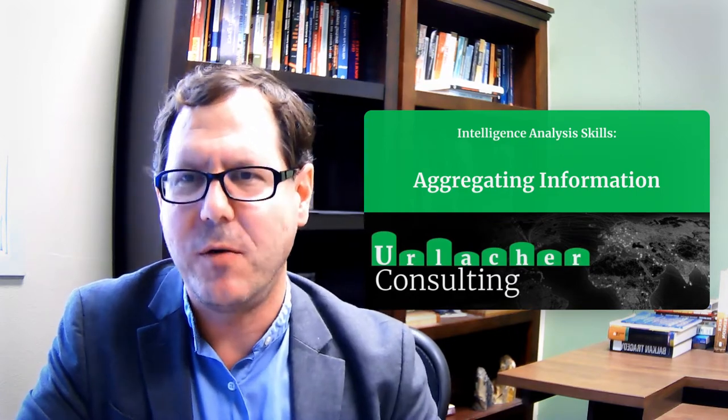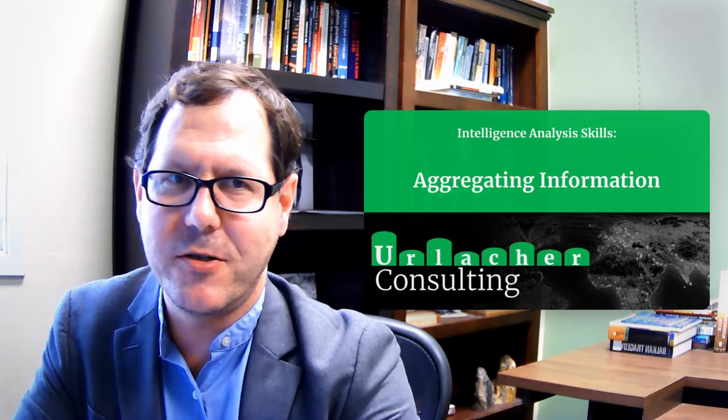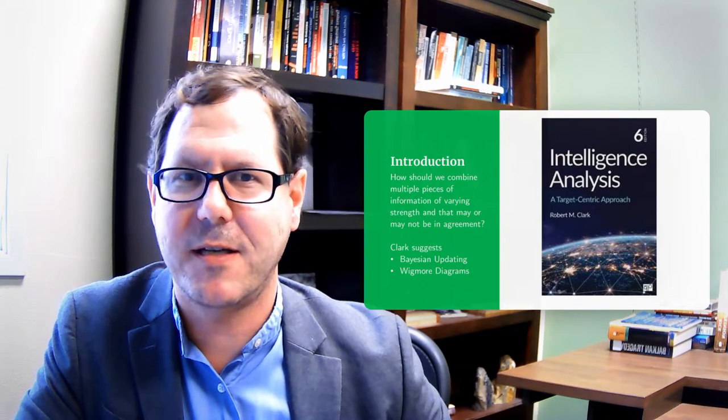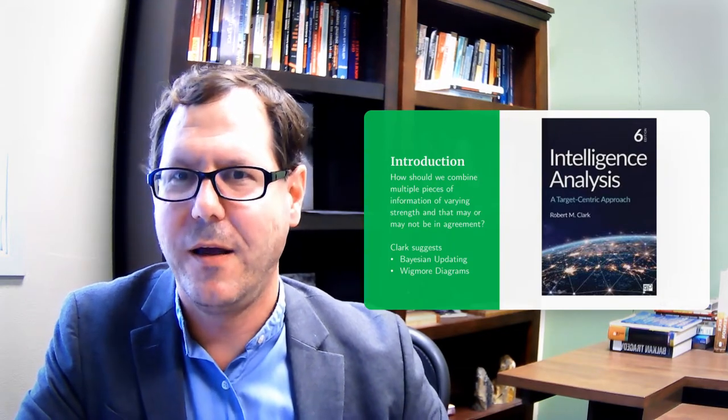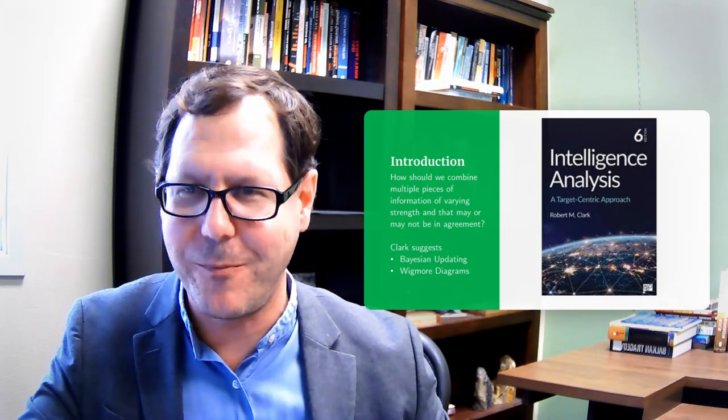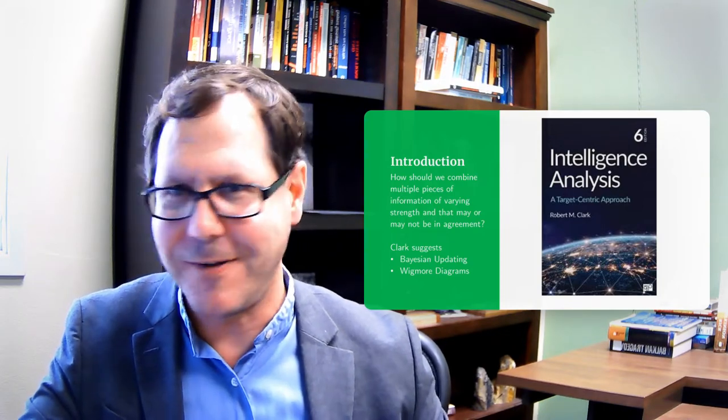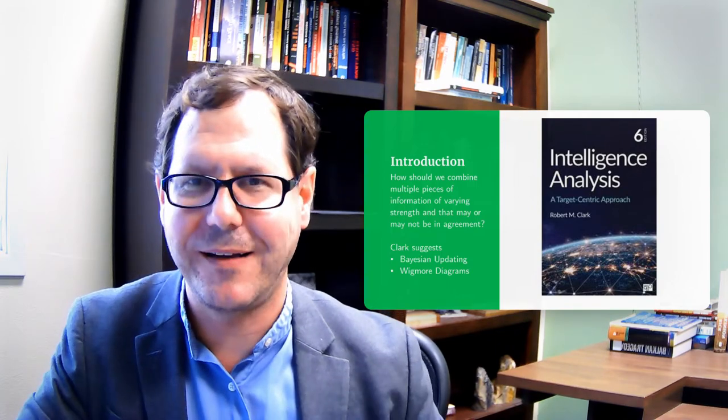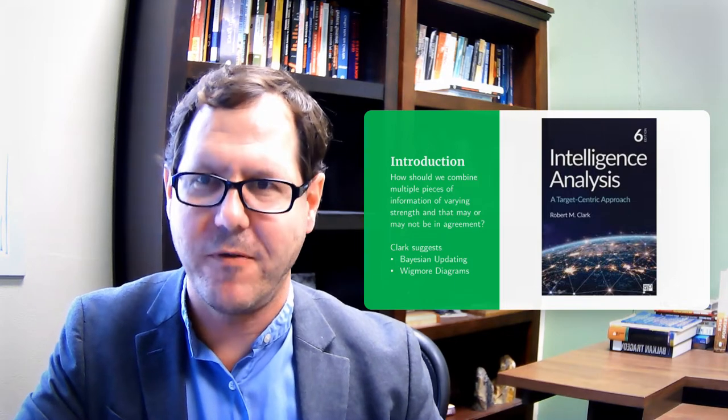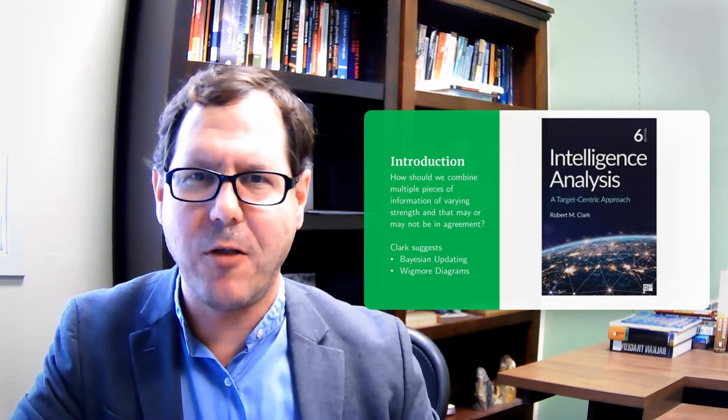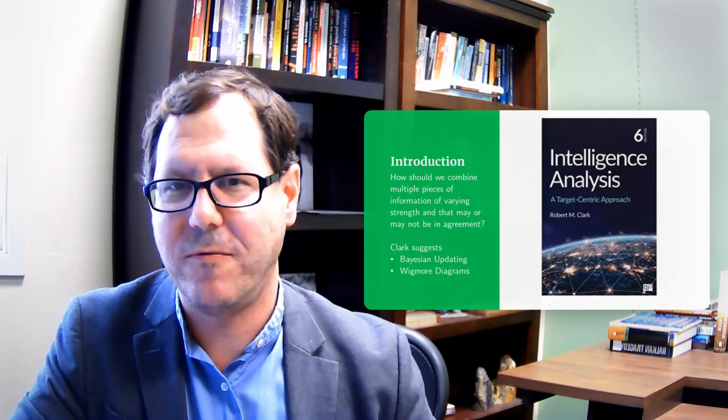Putting information together can be really challenging. And so as I've been looking through research on intelligence analysis, I found the discussion by Robert M. Clark really useful for this because Clark recognizes that you're oftentimes sitting there with a big pile of information. Some of it is good, some of it is not good. And we have to figure out how to put that together in a way that's not cherry picking certain bits of information. And Clark suggests two different techniques for doing this.